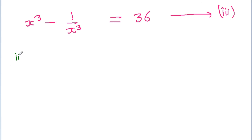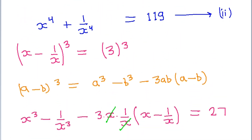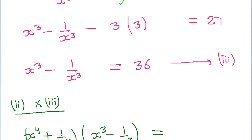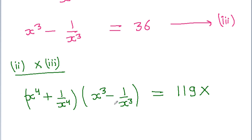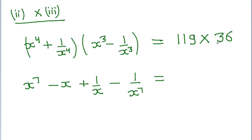If we multiply equation 2 and equation 3, then equation 2 is x to the power 4 plus 1 by x to the power 4, and equation 3 is x cubed minus 1 by x cubed, equal to 119 times 36 on the right-hand side. Expanding: x to the power 4 times x cubed gives x to the power 7, x to the power 4 times minus 1 by x cubed gives minus 1 by x, and 1 by x to the power 4 times minus 1 by x cubed gives minus 1 by x to the power 7. The right-hand side is 119 times 36, which equals 4284.